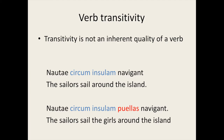The ability of a verb to be both transitive and intransitive is known as ambitransitivity. Here is the Latin example: Nautae circum insulam navigant — here navigant is intransitive. We also have Nautae circum insulam puellās navigant — here the verb is transitive. Puellās, 'the girls', is the direct object.